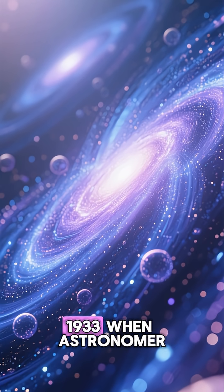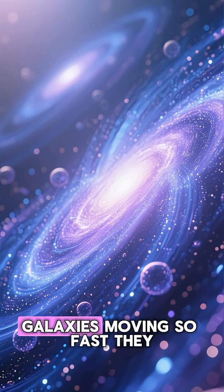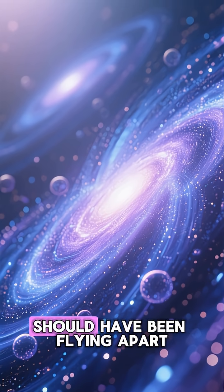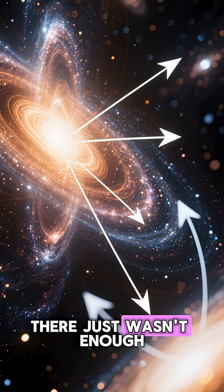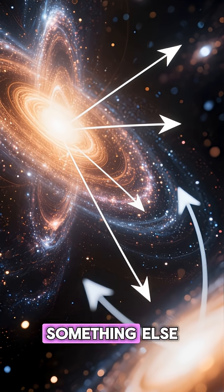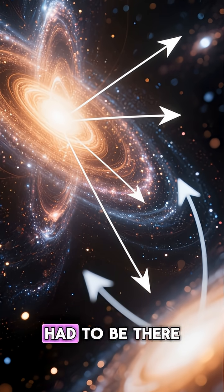It all started in 1933 when astronomer Fritz Wicke noticed galaxies moving so fast, they should have been flying apart. There just wasn't enough visible matter to hold them together with gravity. Something else, something invisible, had to be there.